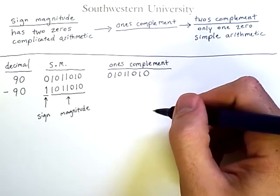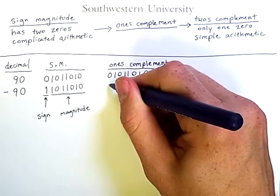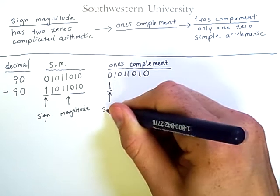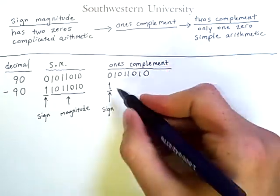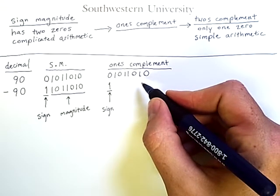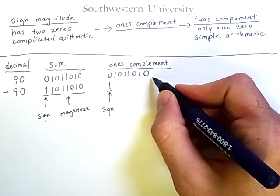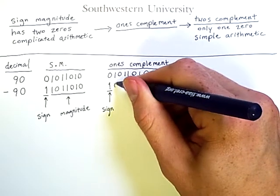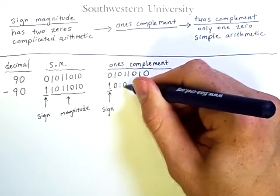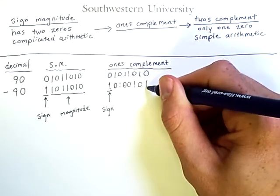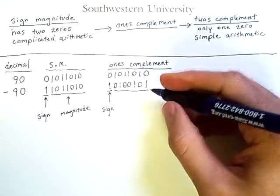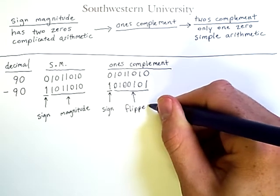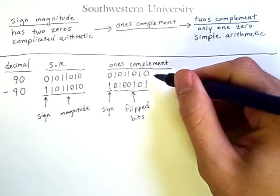However, the negative number is represented differently. We will still have a 1 here to represent a negative sign. But for all of the other digits, we take the opposite of the digit in the positive representation. So 0's become 1's and 1's become 0's. So we have 0, 1, 0, 0, 1, 0, 1. So this is what happens when we flip all the bits from the positive representation.